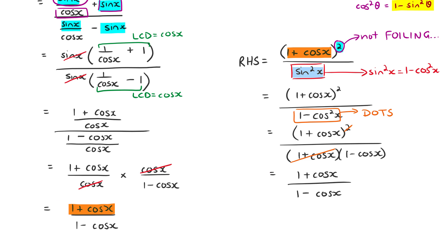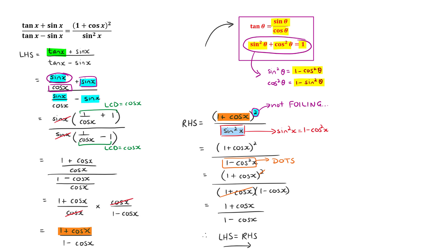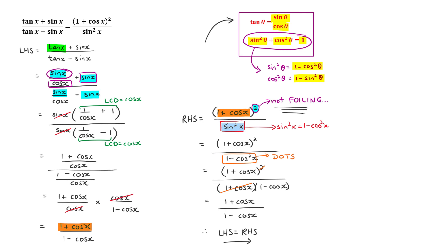Therefore left-hand side equals right-hand side. Looking back on this question, even though it was quite tough, it is doable by following the rules: we factorized, substituted different identity variations such as the difference of two squares form, and used factorization again on the right-hand side. It all came together — a very nice question to go and practice on your own.